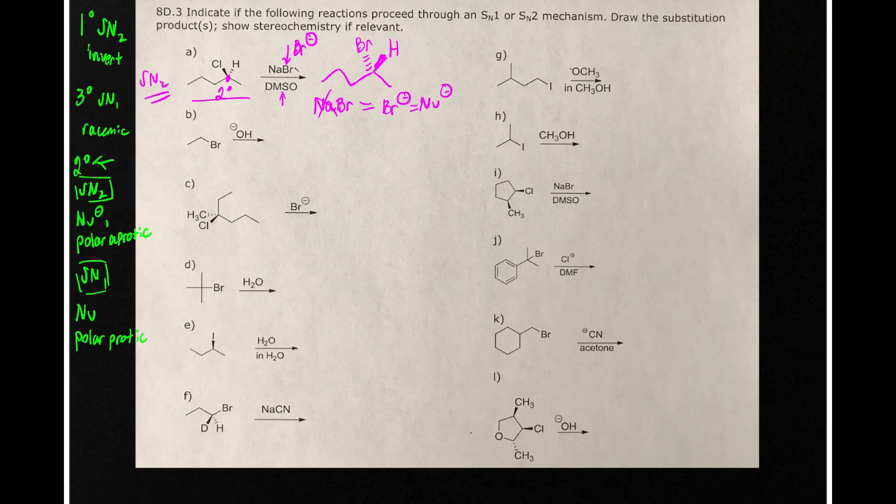In part B, we have a primary alkyl halide. There's no stereochemistry. This is going to be SN2. So we just draw the substitution products.